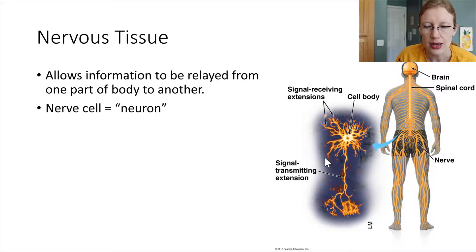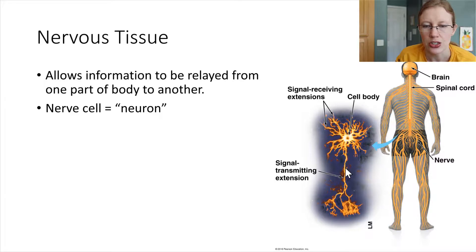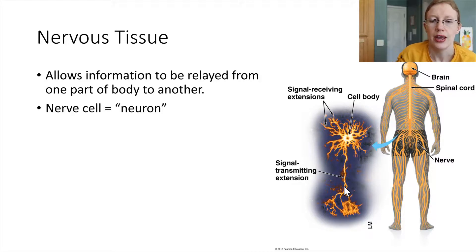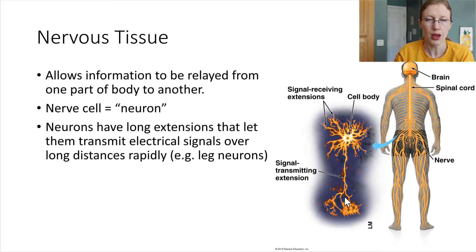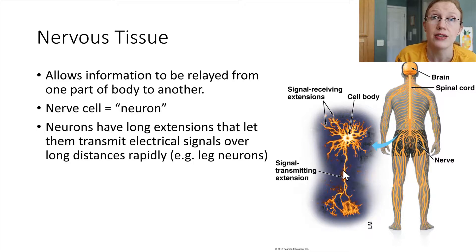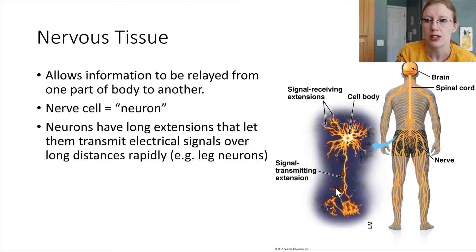This is one cell being shown in this picture. Right here is the cell body, and it has all of these different extensions. There's one really long extension — this is the main branch for sending signals out — and then all of the others are for receiving signals. The way they send a signal is electrical — it's actually just the movement of charge and ions. Sodium and potassium ions in particular are involved in that signal transmission.